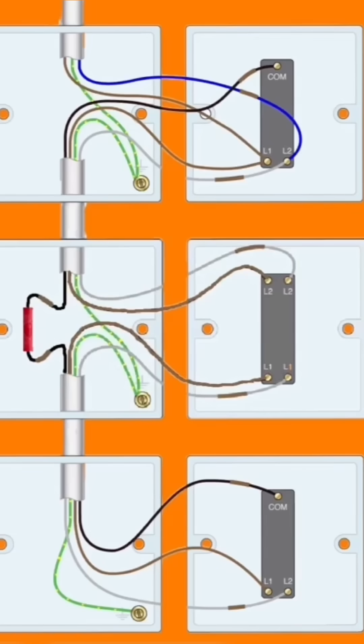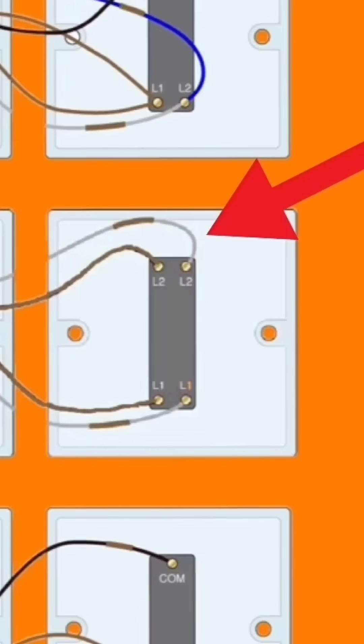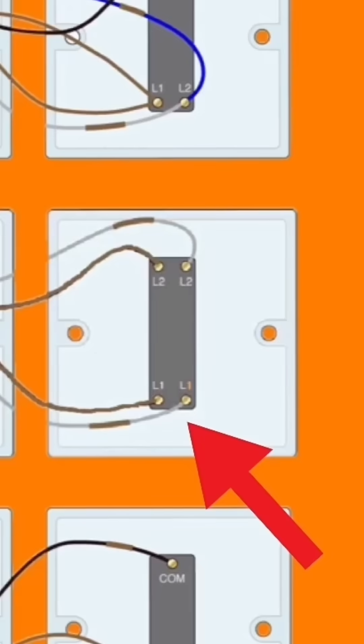We can see we have a brown and gray from one of the three core and CPCs going into the top, and the gray again is identified with brown sleeving. In the bottom from the other three core, we use the brown and gray with the brown sleeving identified again. These brown and gray conductors connected in the intermediate switch are called strappers.